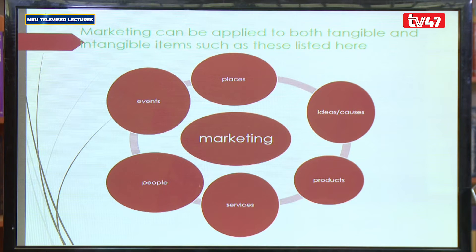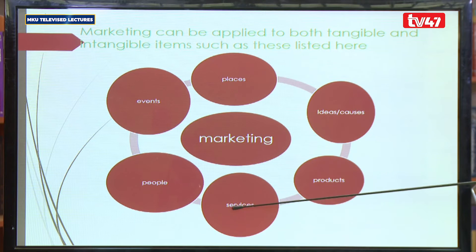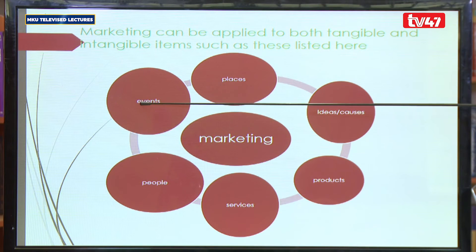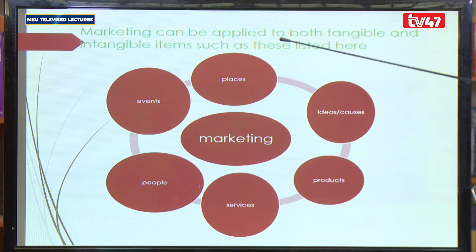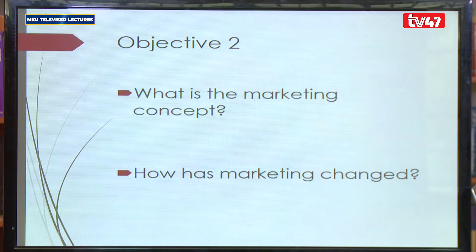Marketing can be applied to both tangible and intangible items, as shown in this diagram illustrating the various types of products that can be marketed. When someone asks what is marketed, we market goods, services, people, events or activities, places or destinations, and ideas or causes. All of those are marketed for people to satisfy their needs and wants.